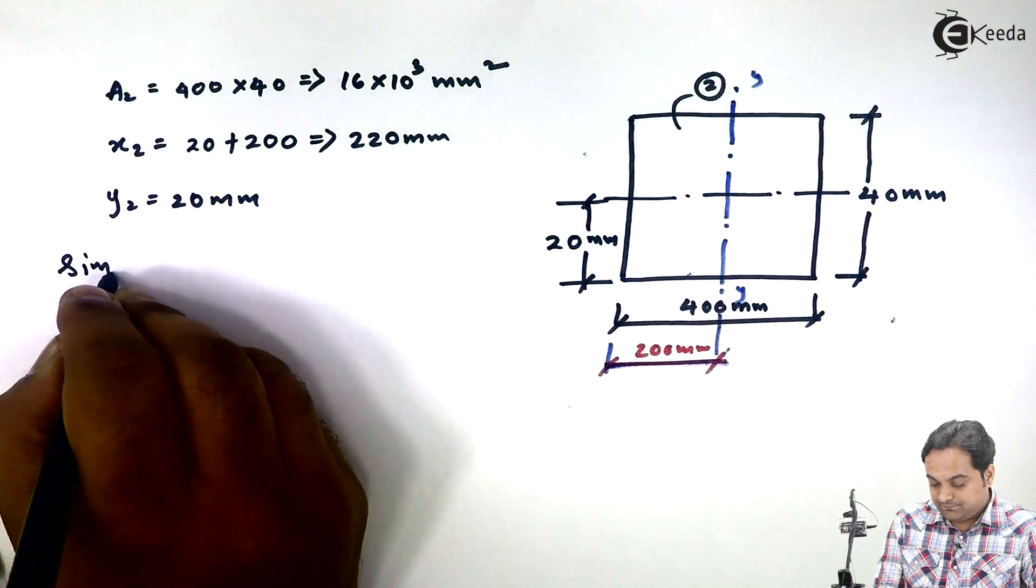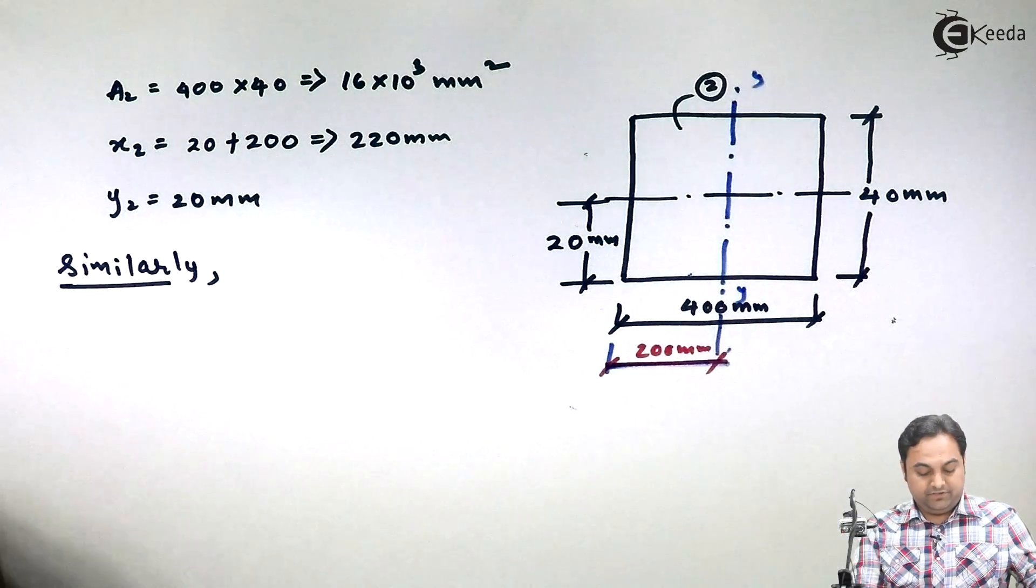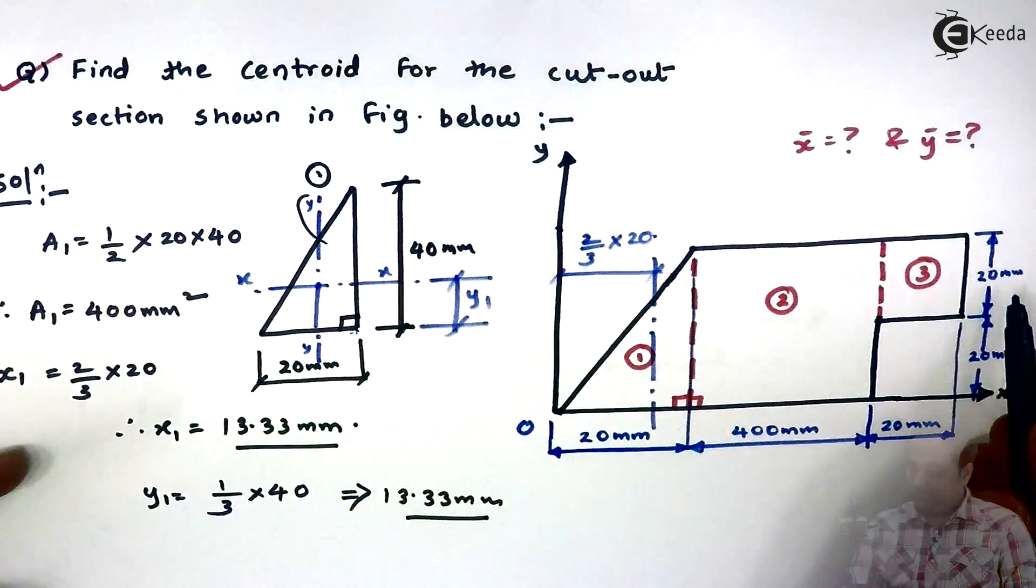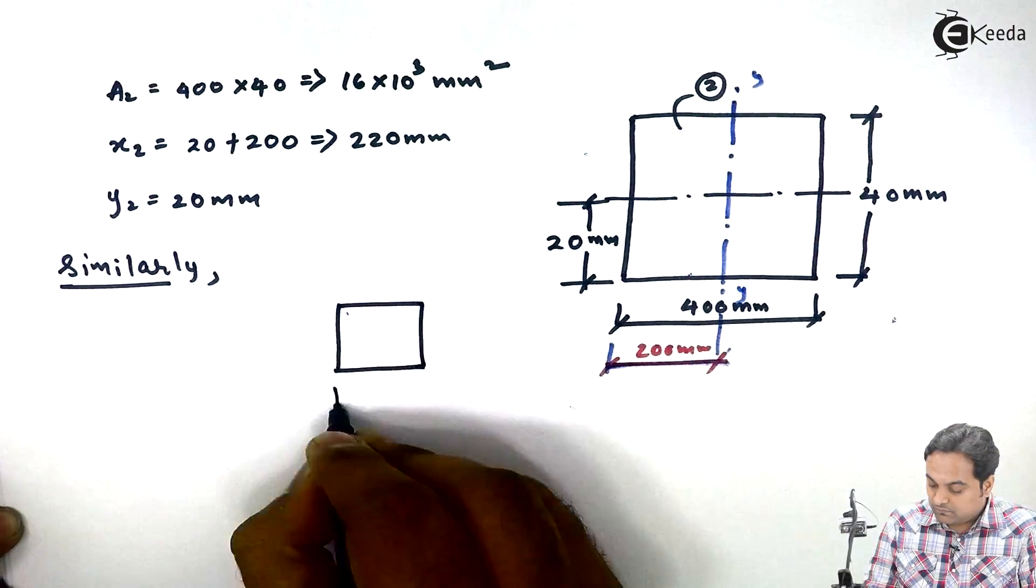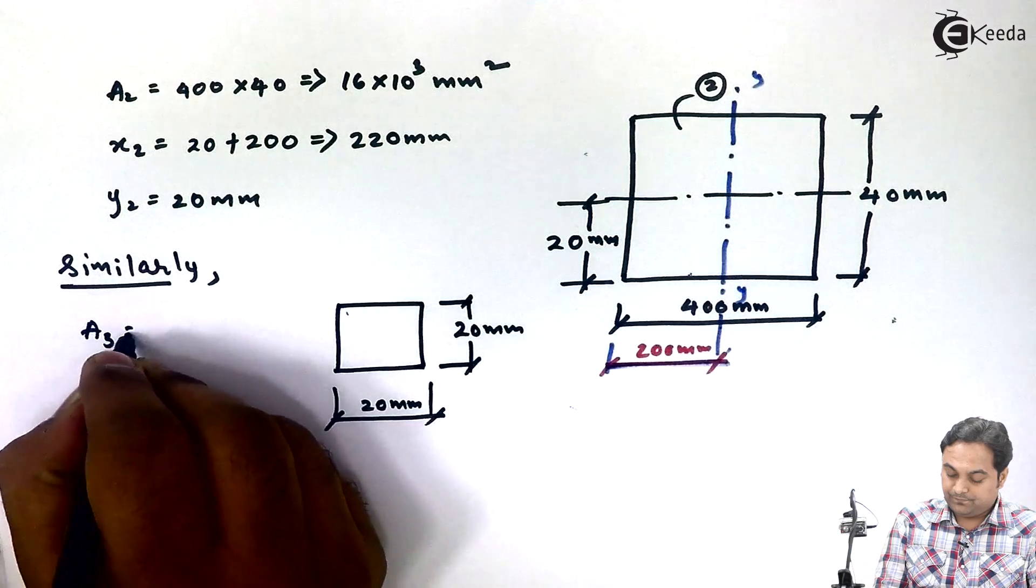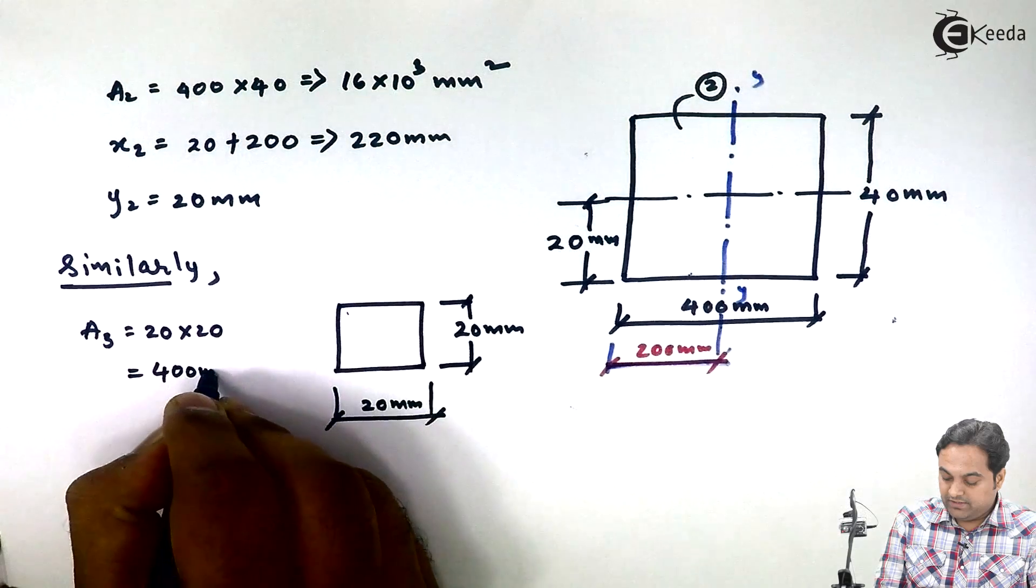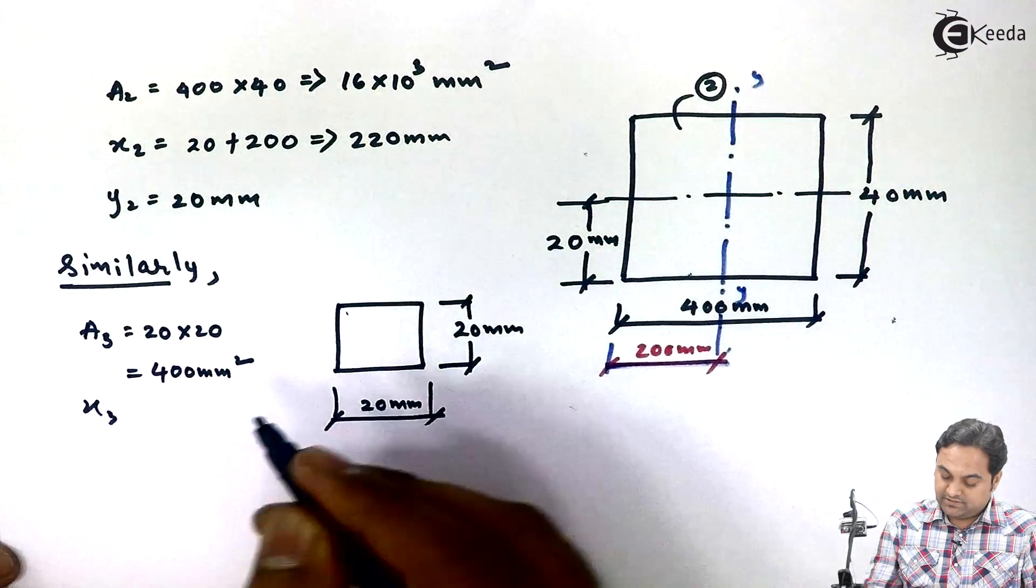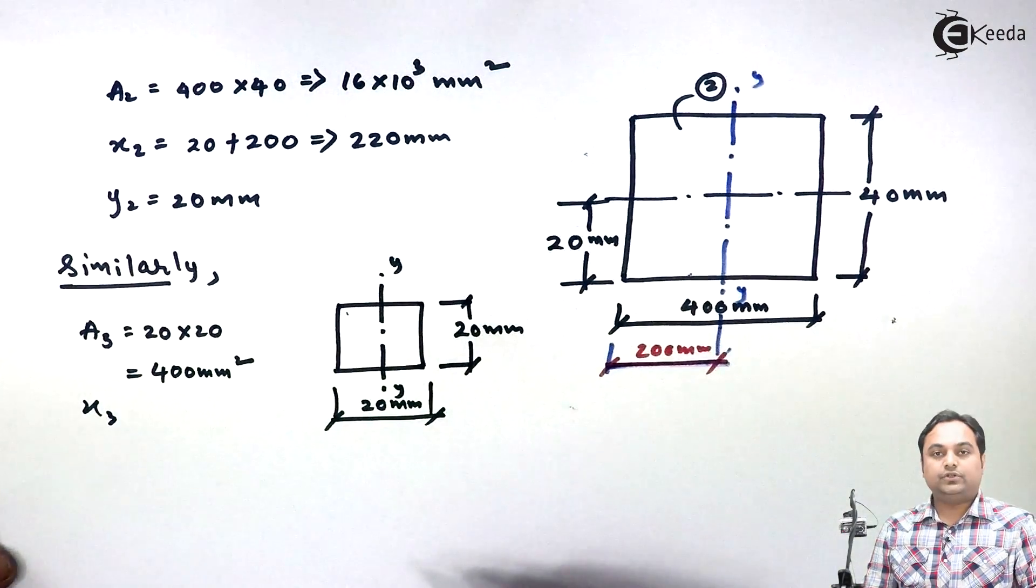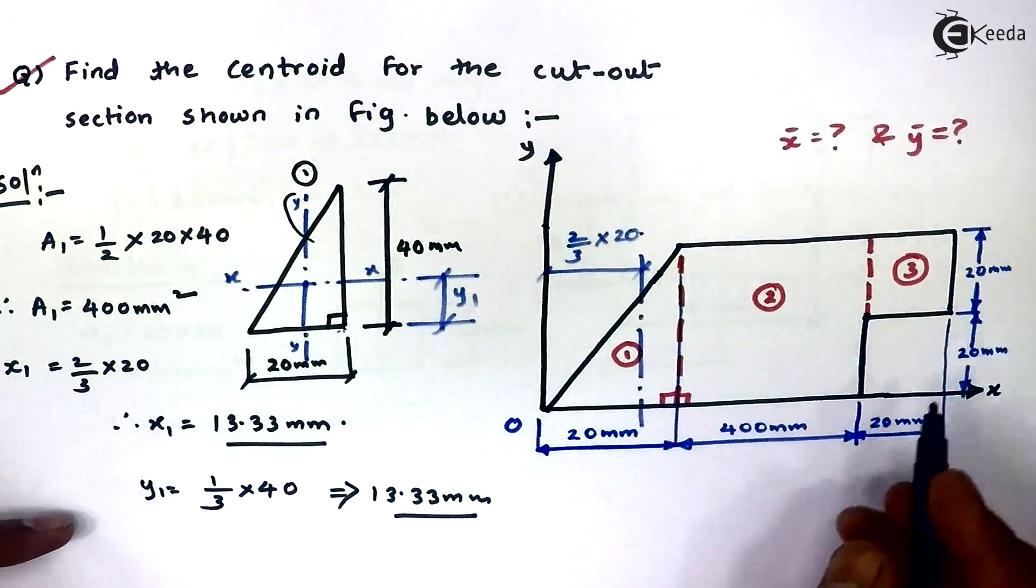Next similarly I will take the third figure. This third figure is a square having 20 as the side. Now the area will be 20 into 20, that comes out to be 400 mm square. So here x3 is the location of y axis for the third figure. Now this y axis would be located at half of 20.